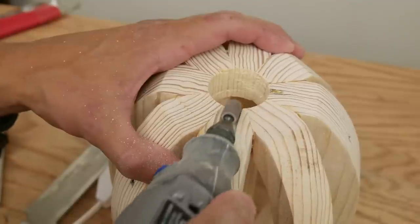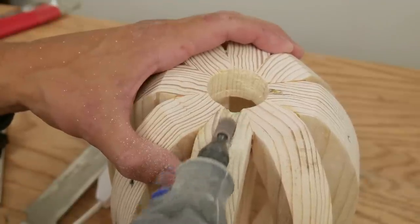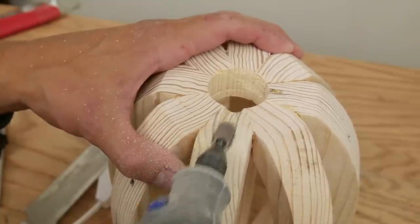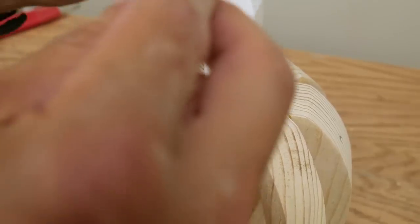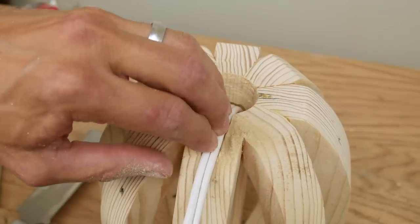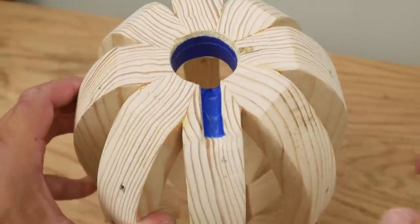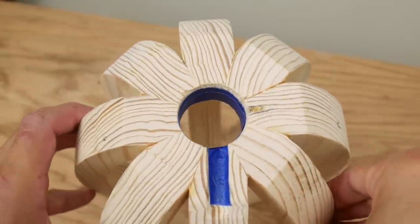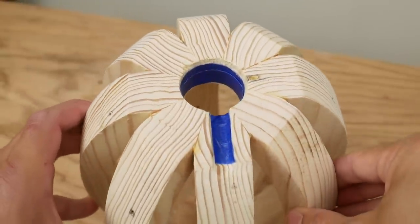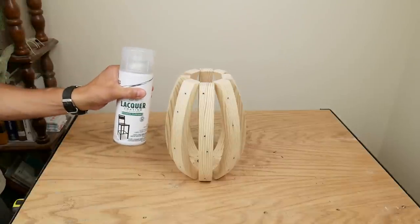I needed a place for a cord to go, so I sanded a groove in the bottom of one of the ribs. Then I taped that groove and the inside of the hole I drilled, so they wouldn't get covered in finish. I finished the lamp with several coats of spray lacquer.